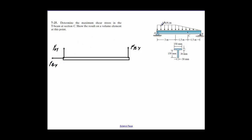So the load for the first 3 meters — 10 times that gives me 30 kilonewtons, and that would be going down right at the middle here. That gives you 30 kilonewtons — that's just 10 times the length. Now here you have a triangle.